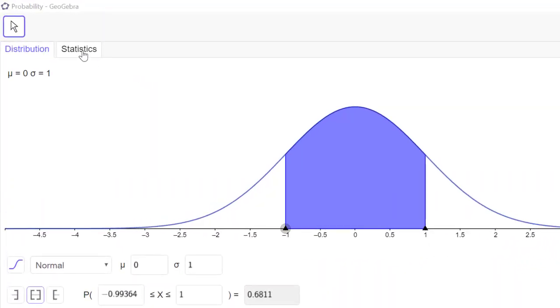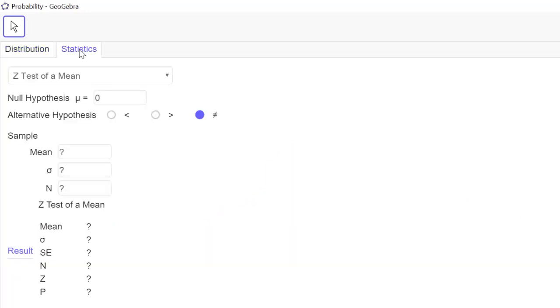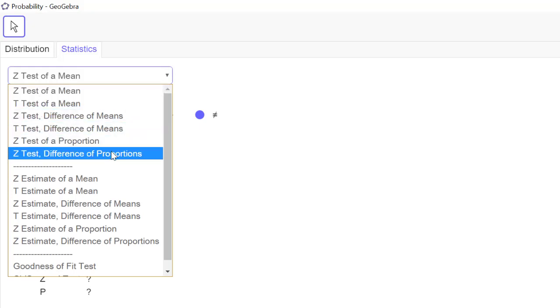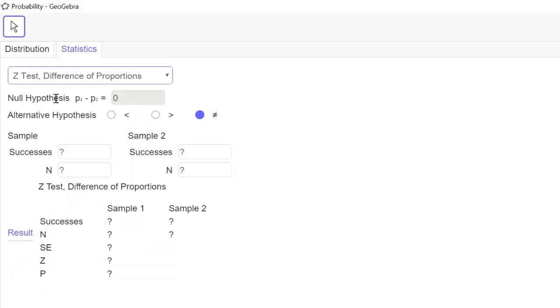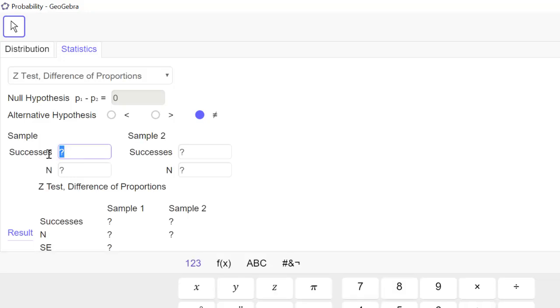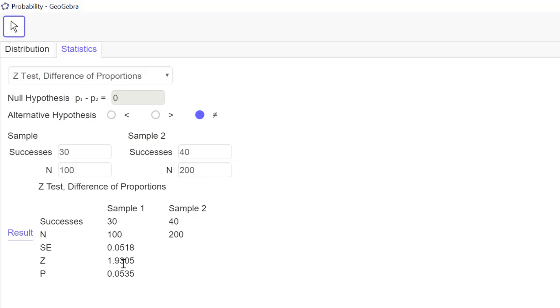Let us try this using GeoGebra. We go to statistics and choose Z test difference of proportions. The null hypothesis is p1 minus p2 equal to 0. It is equivalent of saying p1 equals p2. Our alternate hypothesis is not equal to because we just want to test for differences. Successes are actually dropped calls in the first sample, that is 30. Sample size was 100. In the second case it was 40 dropped calls out of 200.